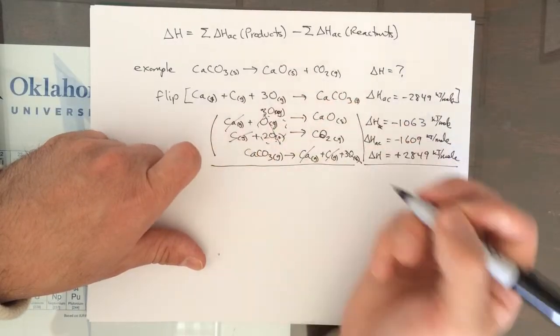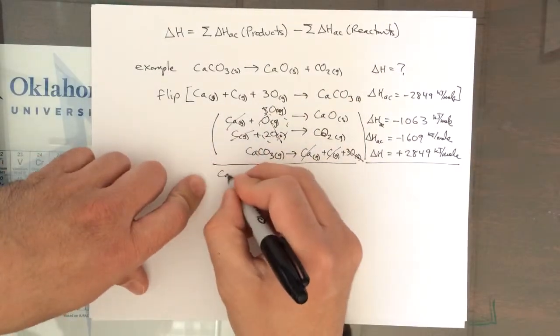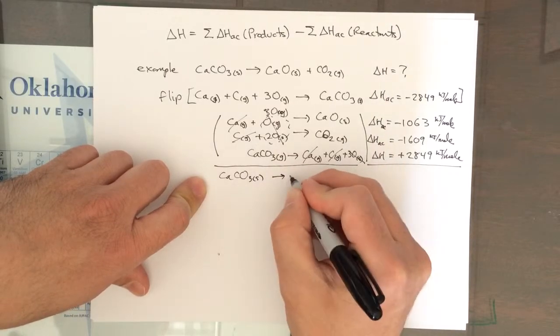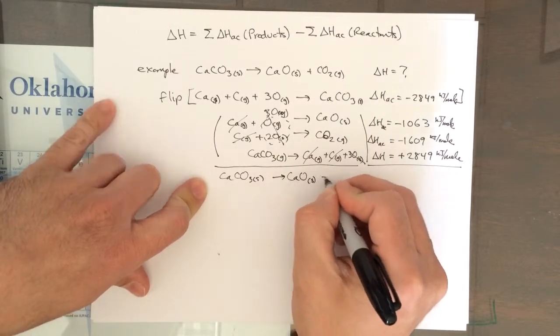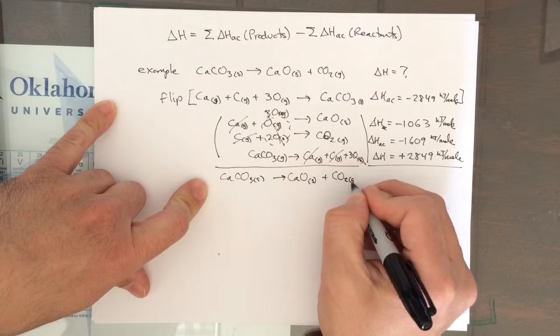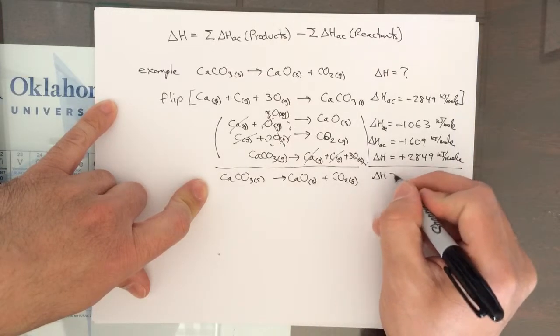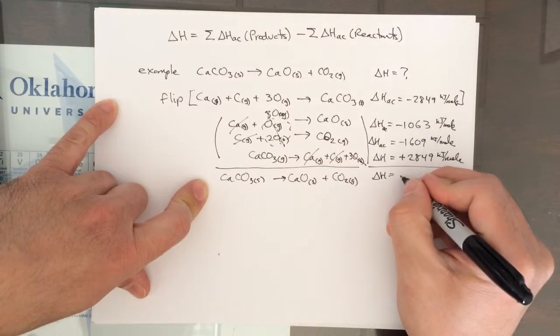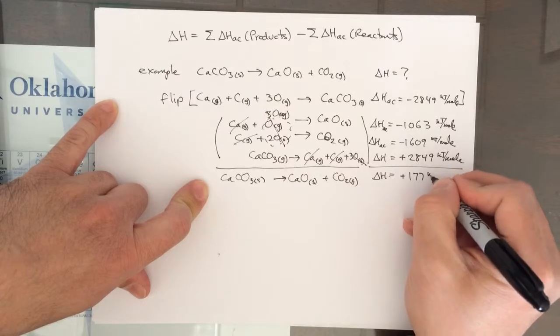The only thing that's left is the calcium carbonate, the calcium oxide, and the carbon dioxide gas. When we add these three delta H's together, we get positive 177 kJ per mole.